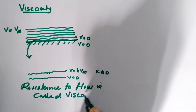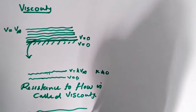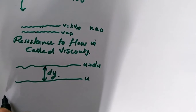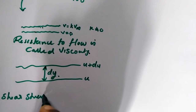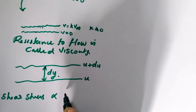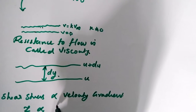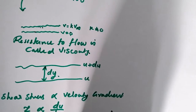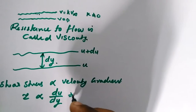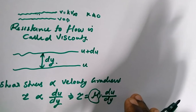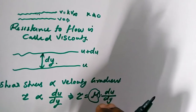Consider two fluid layers: one has velocity u and the one just above it has velocity u plus du, separated by a distance dy. Newton's law of viscosity states that shear stress — that is, shear force per unit area — is proportional to the velocity gradient du/dy. We write this as tau equals mu times du/dy, where mu is a constant called the coefficient of viscosity or dynamic viscosity.